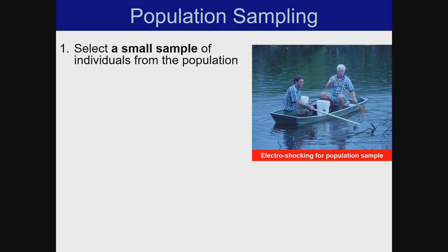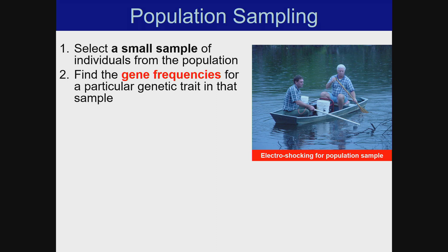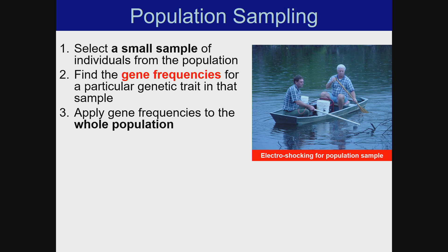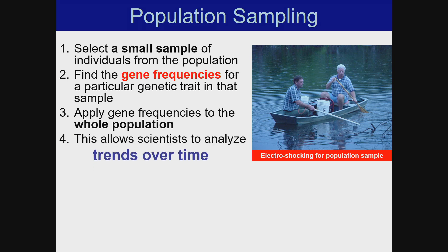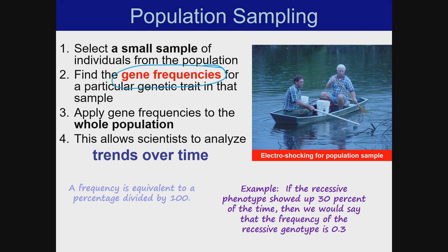Population sampling is when we select a small sample of individuals from the population, find the gene frequencies for a particular genetic trait in that sample, and then apply those gene frequencies to the whole population, assuming the sample is a good representation. This allows scientists to analyze trends over time — whether evolution is occurring or not. Gene frequency is how often a gene shows up in a population; frequency is equivalent to a percentage divided by 100. For example, if the recessive phenotype showed up 30% of the time, the frequency of the recessive genotype is 0.3.